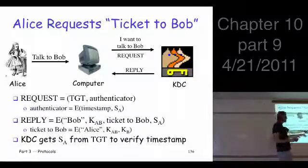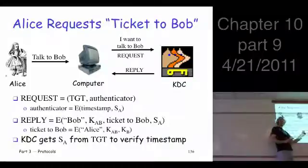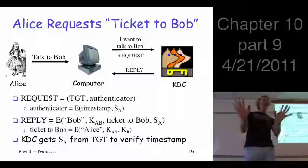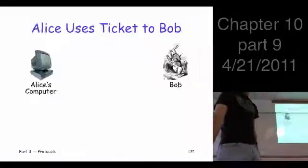When Alice receives this, she decrypts this. She gets the ticket out. She keeps track of the key she's going to use to talk to Bob. Now when she actually wants to talk to Bob, she hasn't done that yet. Now she actually wants to talk to Bob.